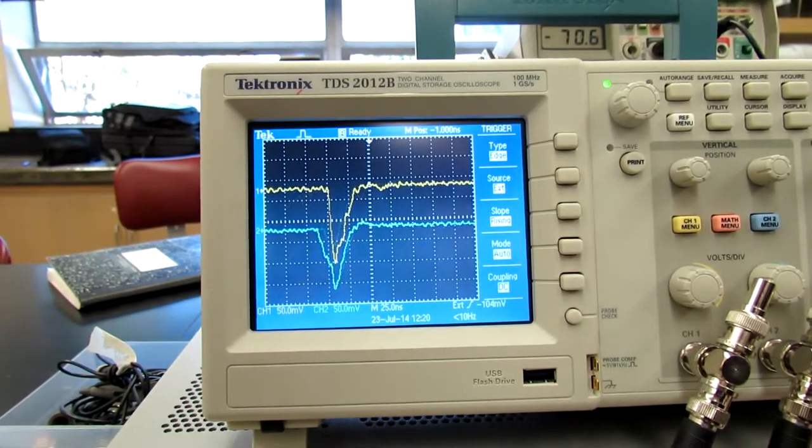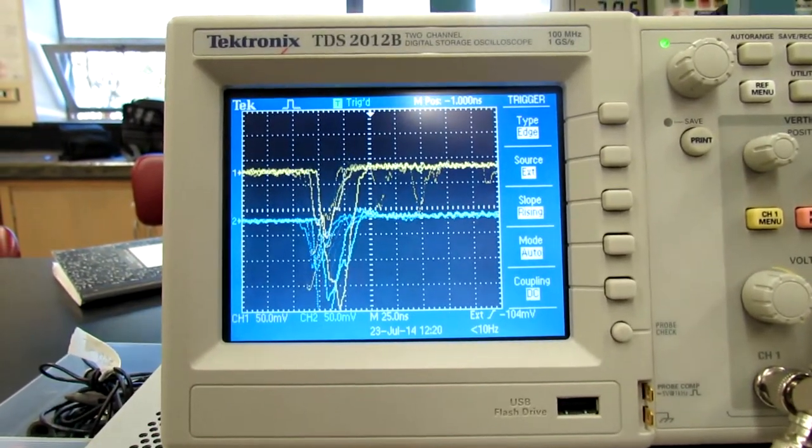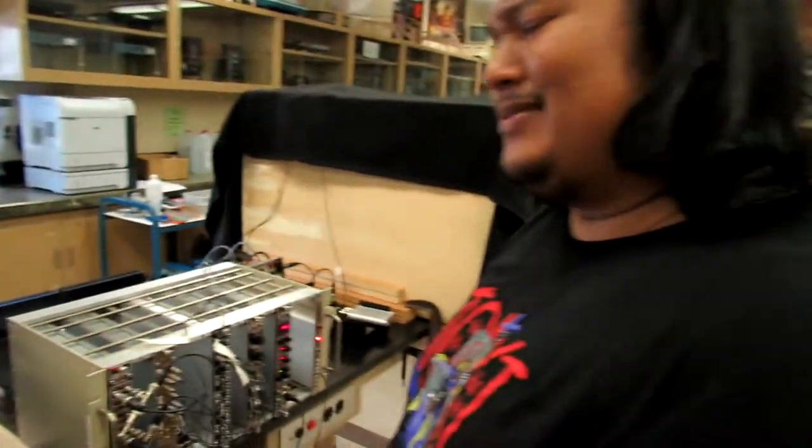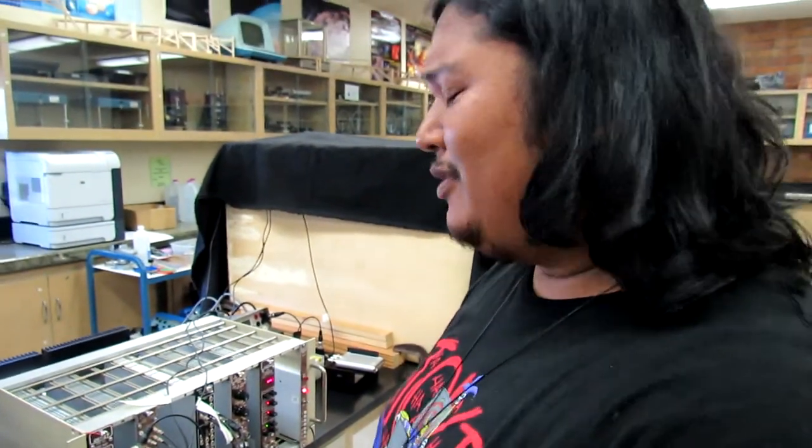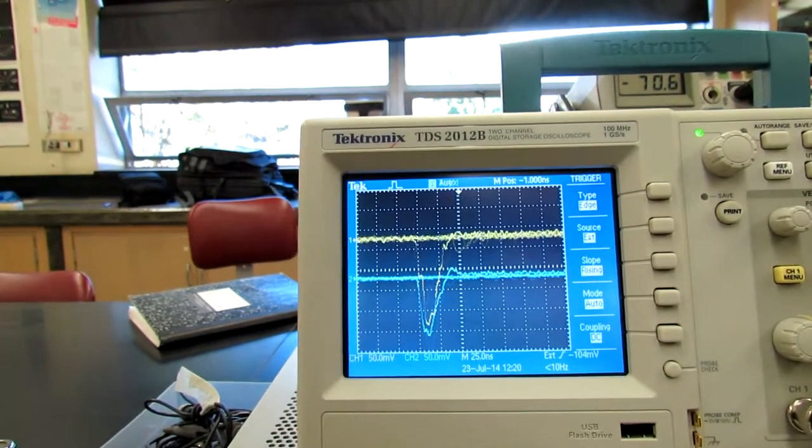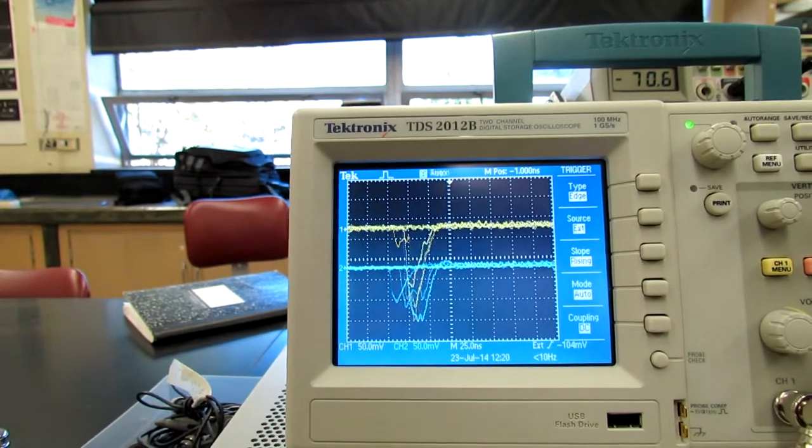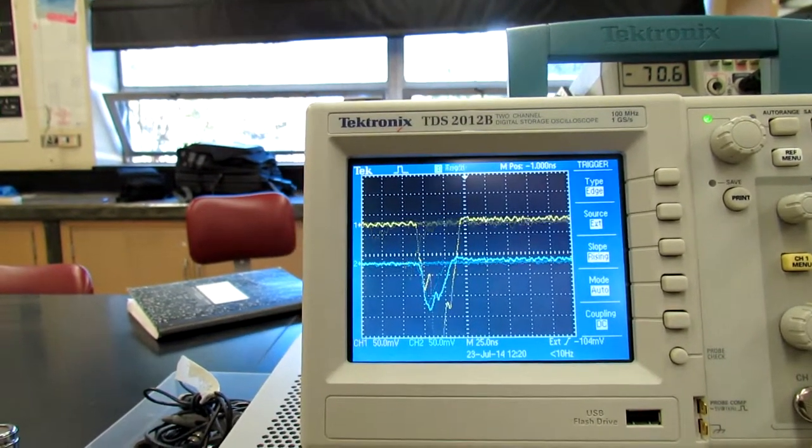So these are signals that are coming in at the exact same time? At the exact same time, or within, I believe our window is 20 nanoseconds or 25. 20 or 25 nanoseconds is the window that we're triggering off of. So this is a representation of a cosmic ray hitting both of our detectors at the same time.